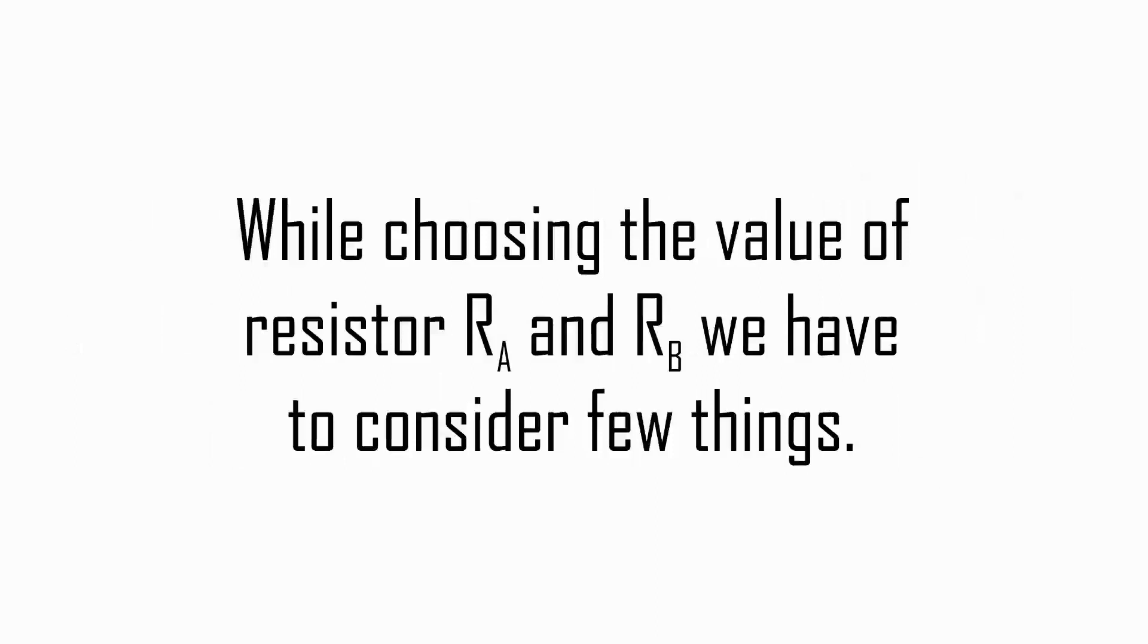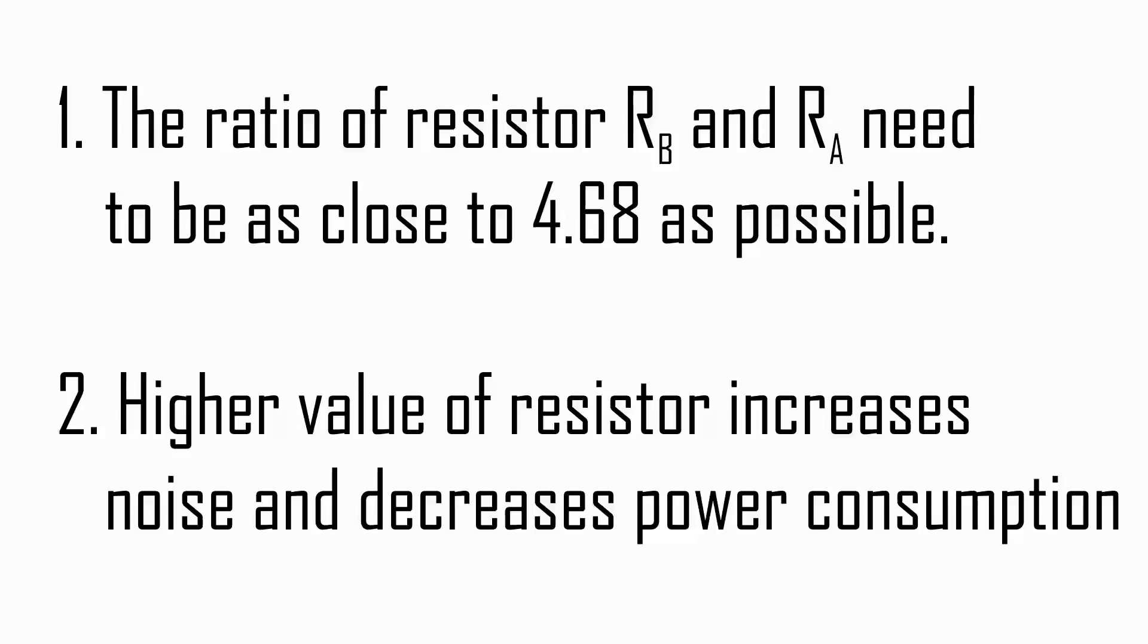While choosing the value of resistor Ra and Rb we have to consider a few things. The ratio of resistor Rb and Ra needs to be as close to 4.68 as possible. Similarly, higher value of resistor increases noise and decreases power consumption.